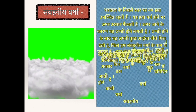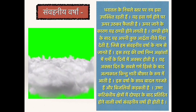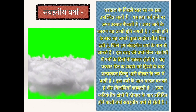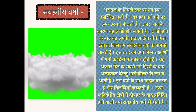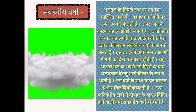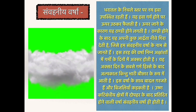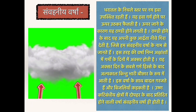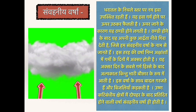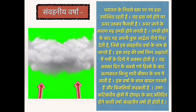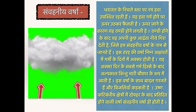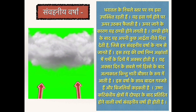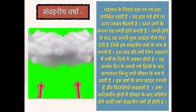धरातल के निचले स्तर पर नमी वाली हवा उपस्थित रहती है। यह हवा गर्म होने पर ऊपर उठ कर फैलती है। ऊपर जाने के कारण यह ठंडी होने लगती है। ठंडी होने के बाद यह अपनी कुछ आर्द्रता नीचे गिरा देती है। जिसे हम संवहन वर्षा के नाम से जानते हैं। इस तरह की वर्षा निम्न अक्षांशों में गर्मी के दिनों में अक्सर होती है।